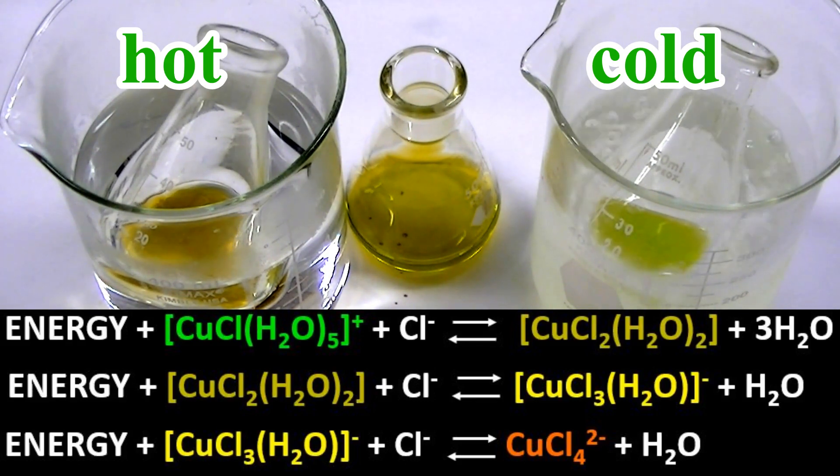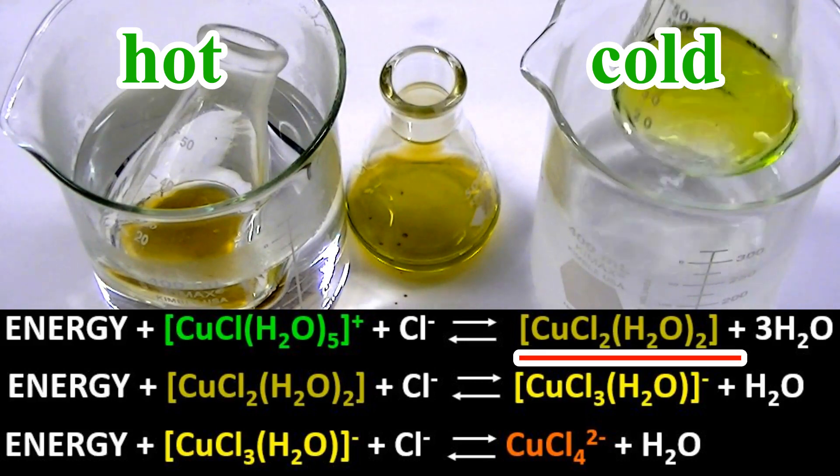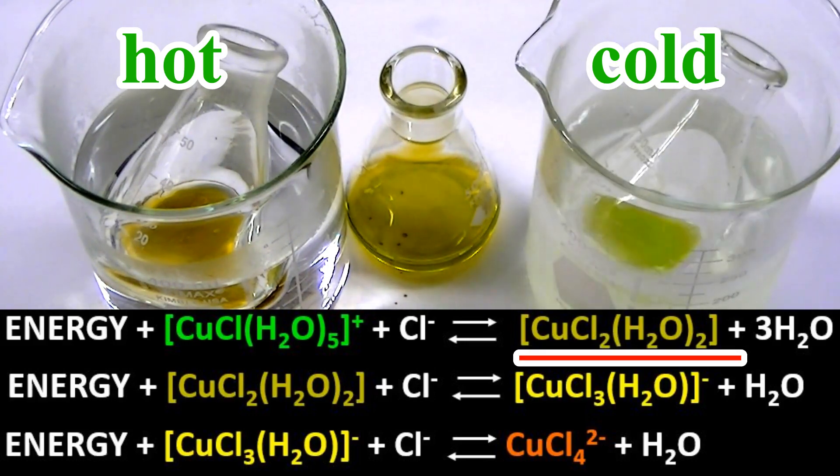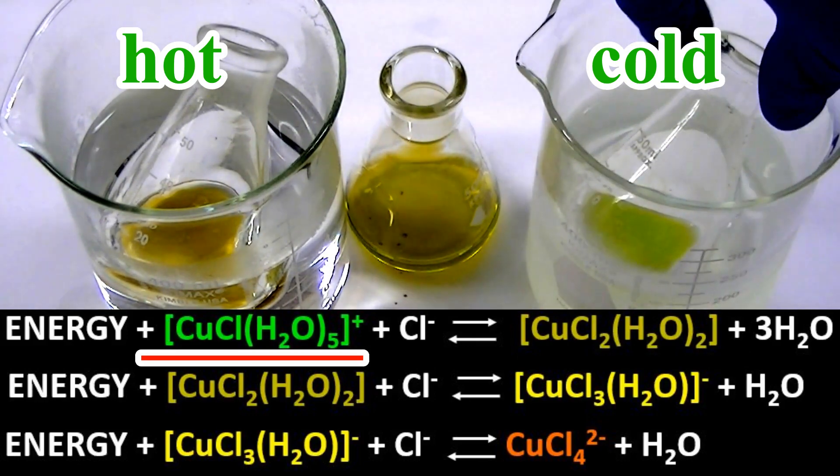Endothermic reactions tend in the reverse direction toward reactants at lower temperatures. Thus, the dichloro-copper complex is converted to the green monochloro-complex in the chilly dry ice acetone mixture.